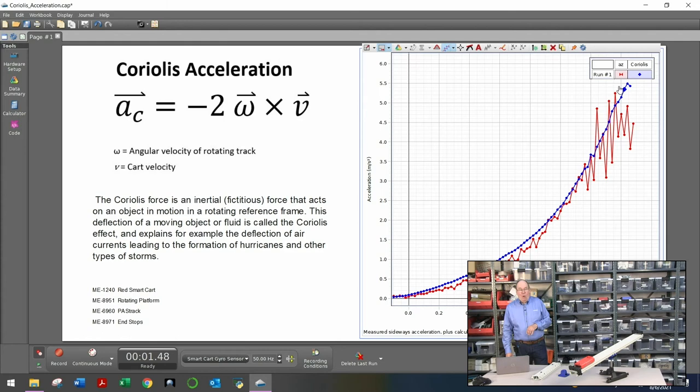But what you can see is the two data track very well. Now, one isn't pure theory. Even the centripetal acceleration calculation is still using real data. So what's, to me, the most amazing thing about this is that we're measuring all three quantities at once. We're measuring the actual speed of the cart, the rotational speed of the track, and that sideways acceleration. The speed's changing, the angular speed's changing, and the acceleration changing all at once.